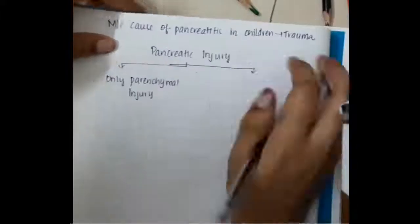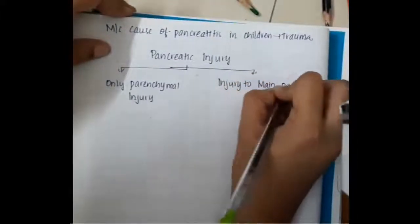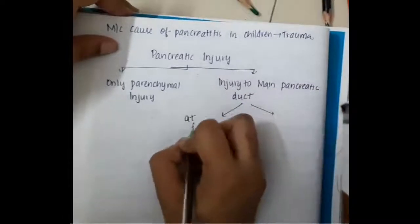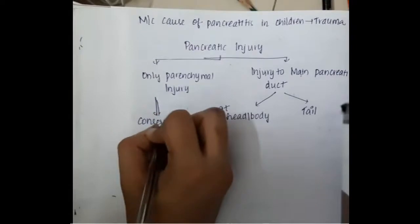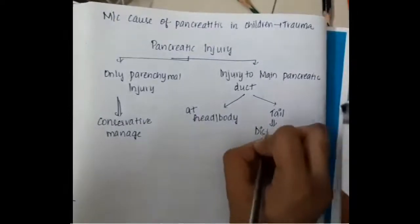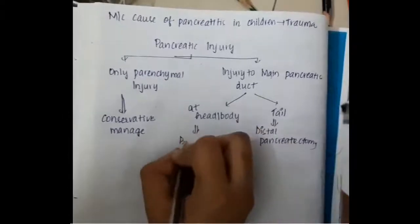Pancreatic injury can be divided into two types: only pancreatic parenchymal injury, or injury to the main pancreatic duct. If there is only pancreatic parenchymal injury, conservative management can be done. If there is injury to the main pancreatic duct, it is further divided based on whether the injury is at the head or body versus the tail of the pancreas.